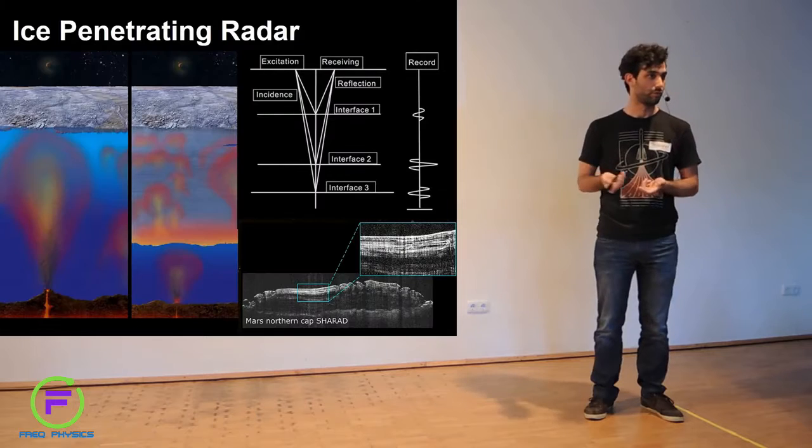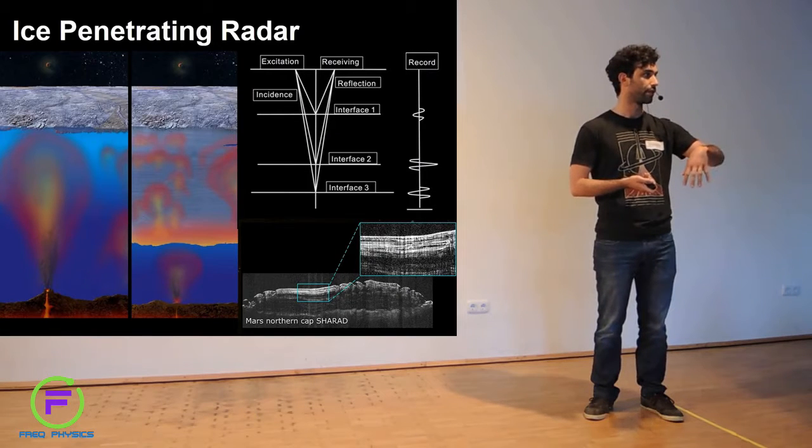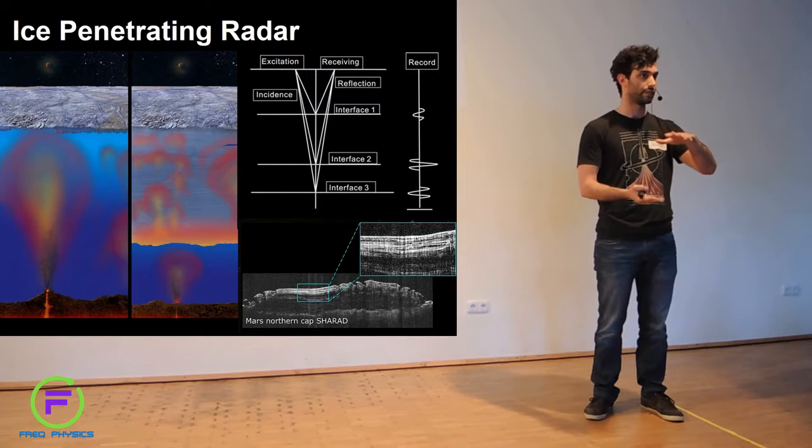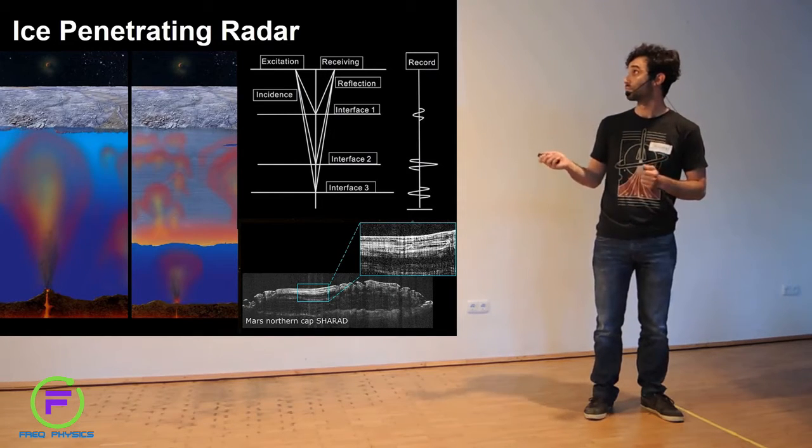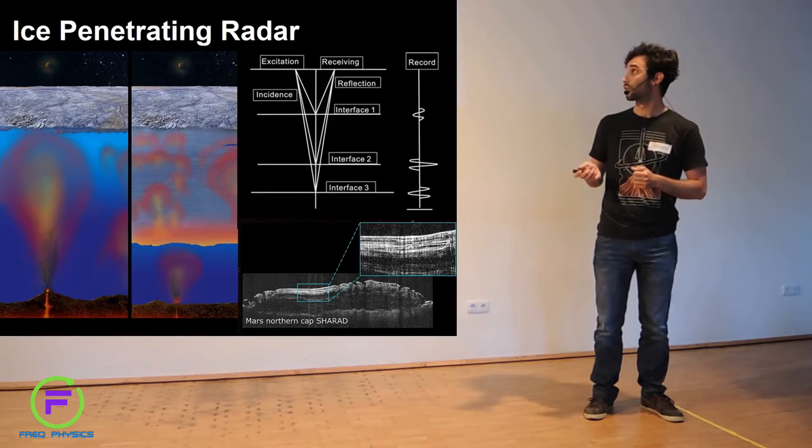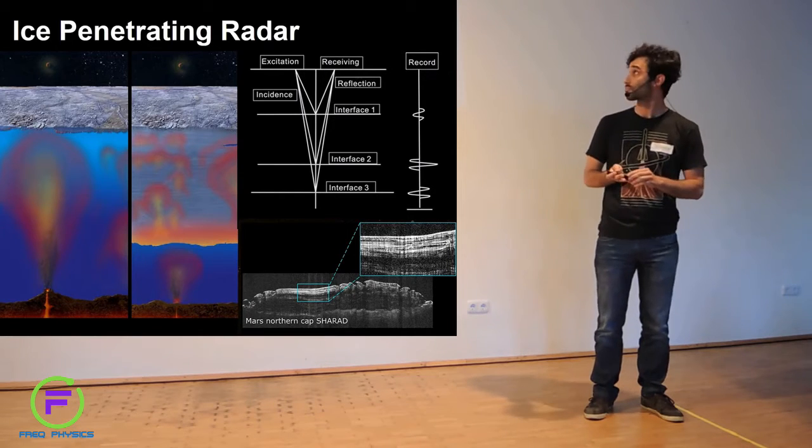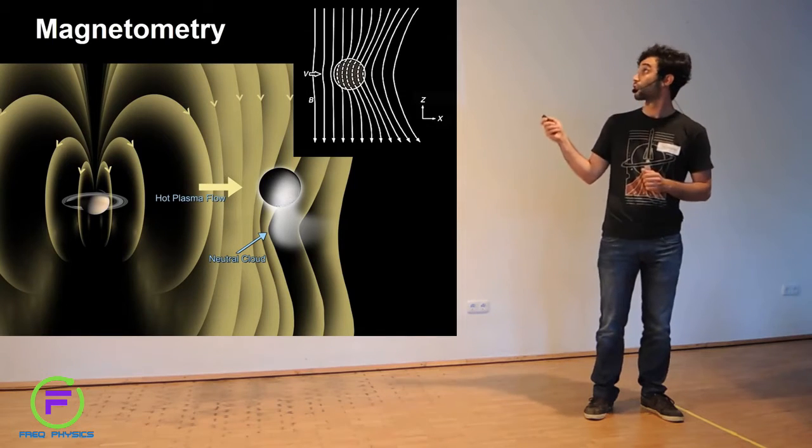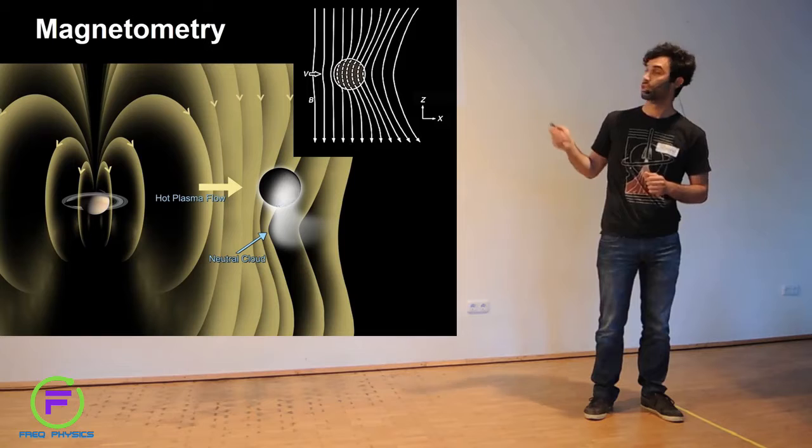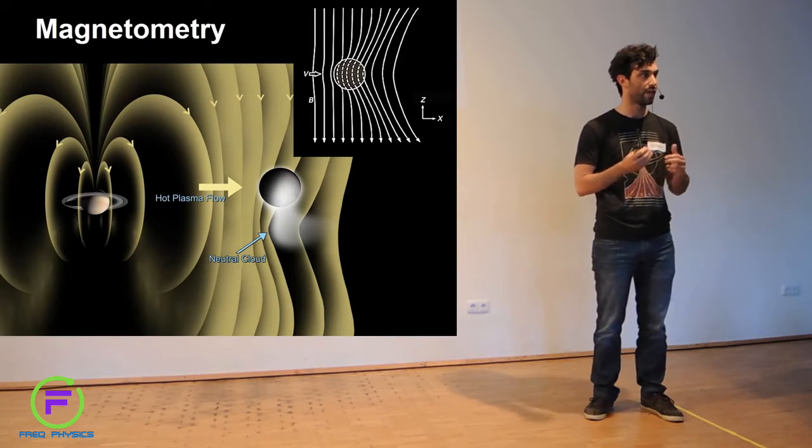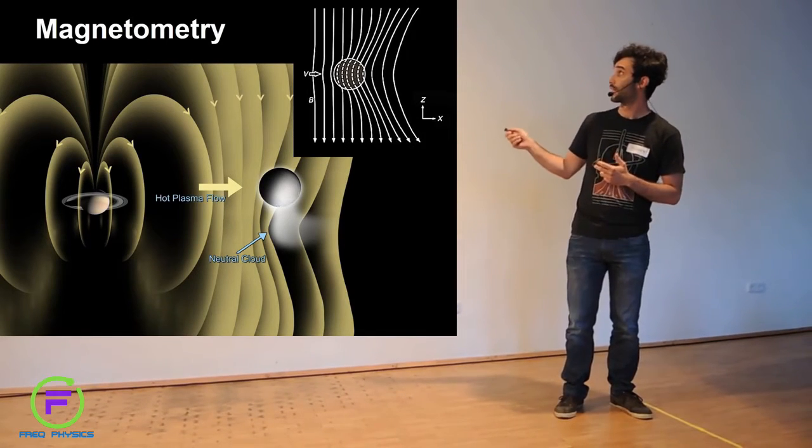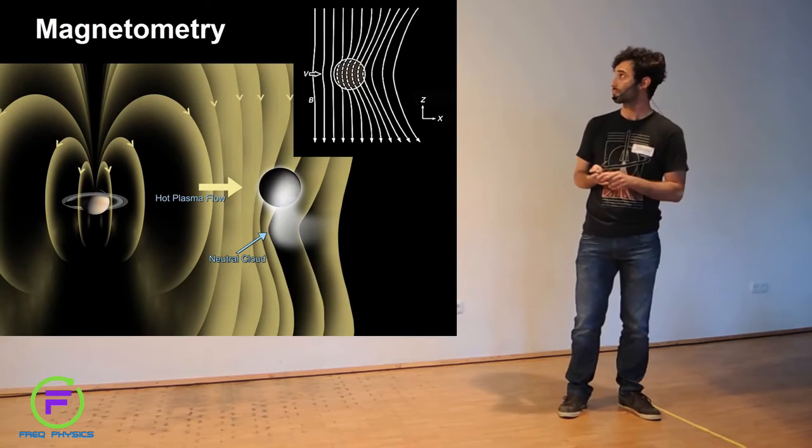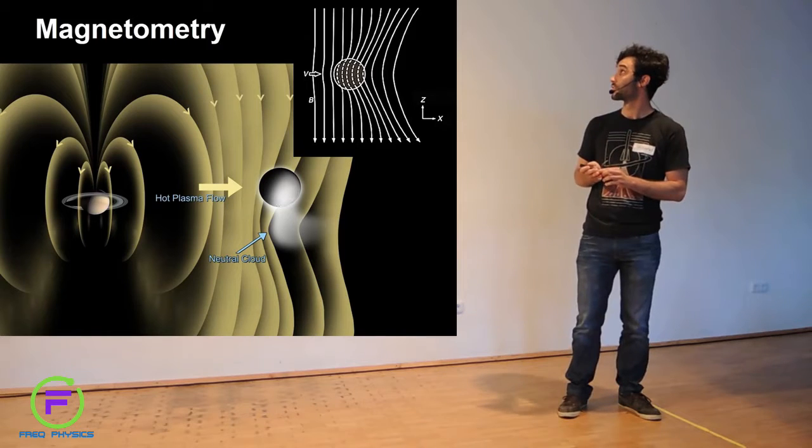You can also use radar, so you sense the ocean with radar. You can see the interfaces, how deep is the ice shell, and then you can constrain your ocean models. And also magnetometry. Those giant planets, they have magnetic fields. Those fields are modified by the moons, and the way they are modified, if you have a magnetometer flying around, it can tell you a lot about the internal structure of the moon.